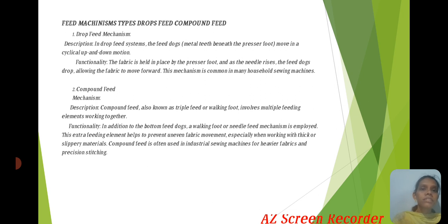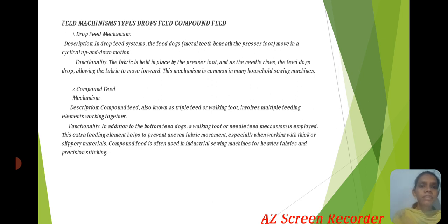Feed Mechanisms — Drop Feed: In the Drop Feed system, the feed dog moves in an elliptical up-and-down motion. The fabric is held in place by the presser foot, and as the needle rises, the feed dog drops along with the fabric to move it forward. This mechanism is common in many household sewing machines.